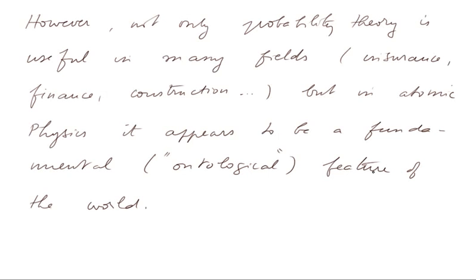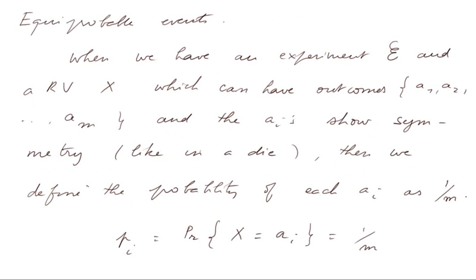So, let's turn now to some techniques about probabilities. First of all, let's talk about equiprobable events. When we have an experiment E and a random variable X, which can have outcomes A1, A2, up to AM,